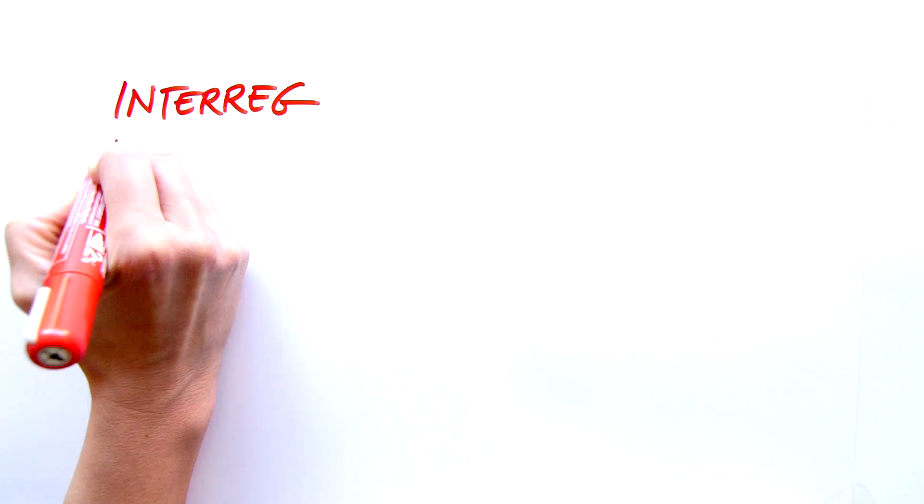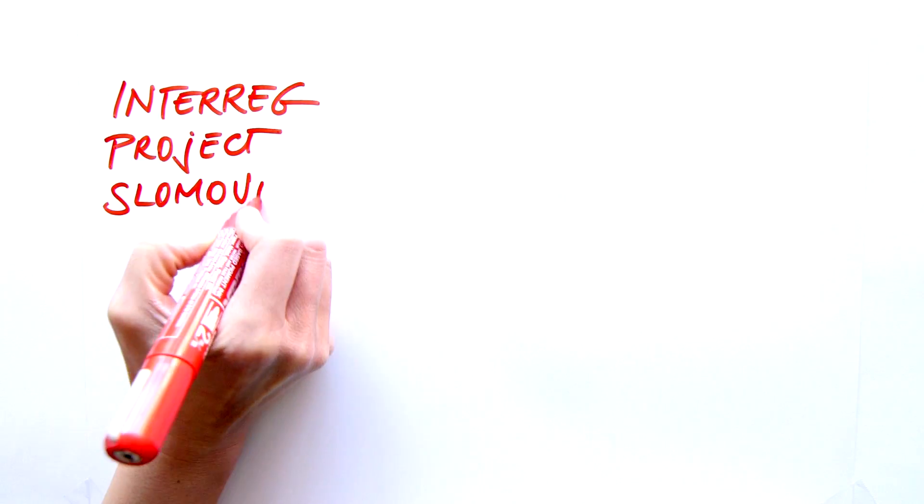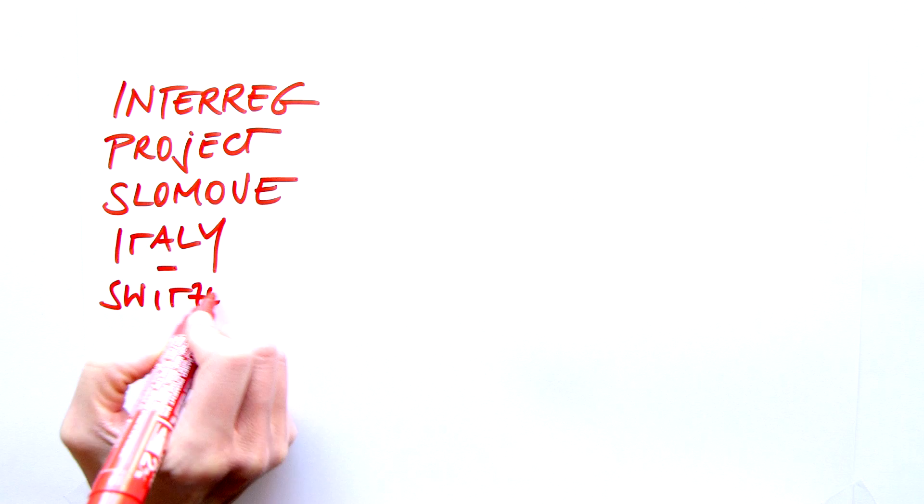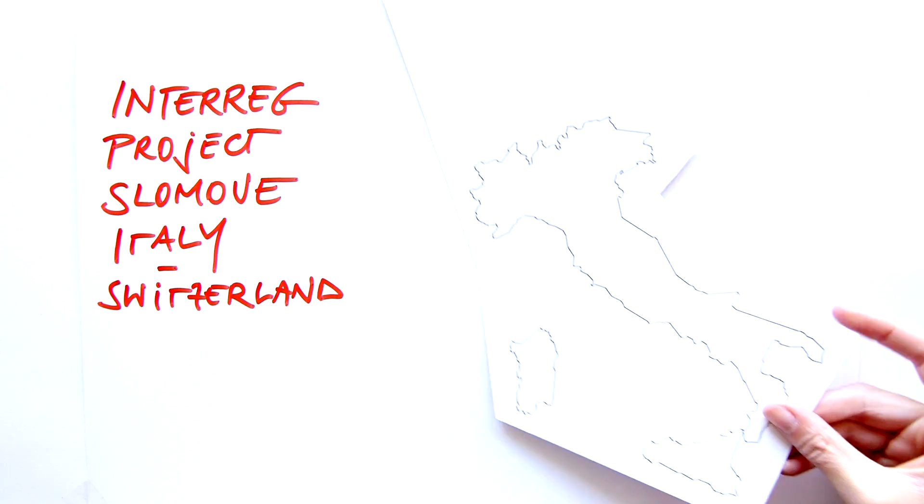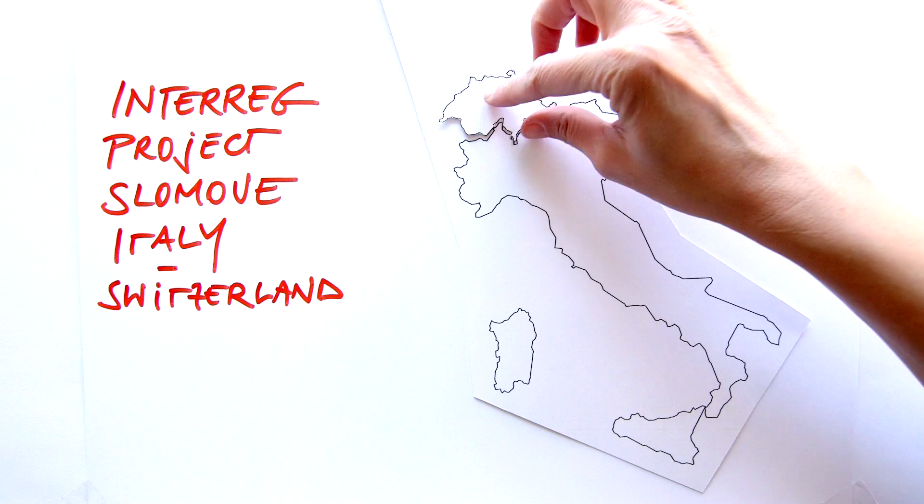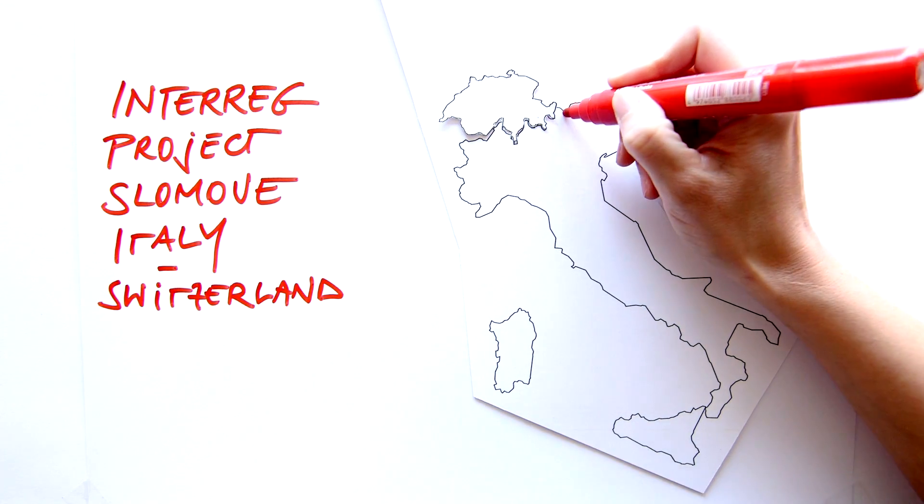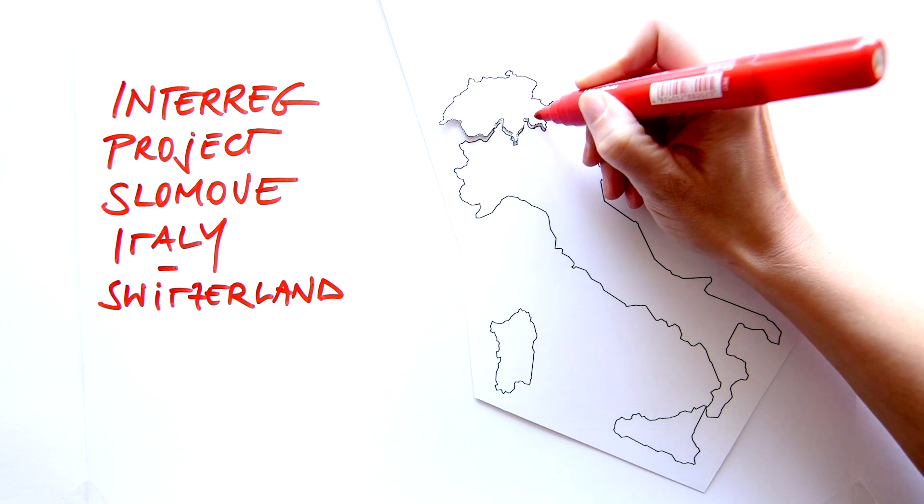The Interreg project Slow Move Italy Switzerland has developed a new integrated methodology to monitor slow mass movements that may cause landslides. The system is being tested in two pilot sites in Valsenales in South Tyrol and Pontresina in the Grisons canton in Switzerland.